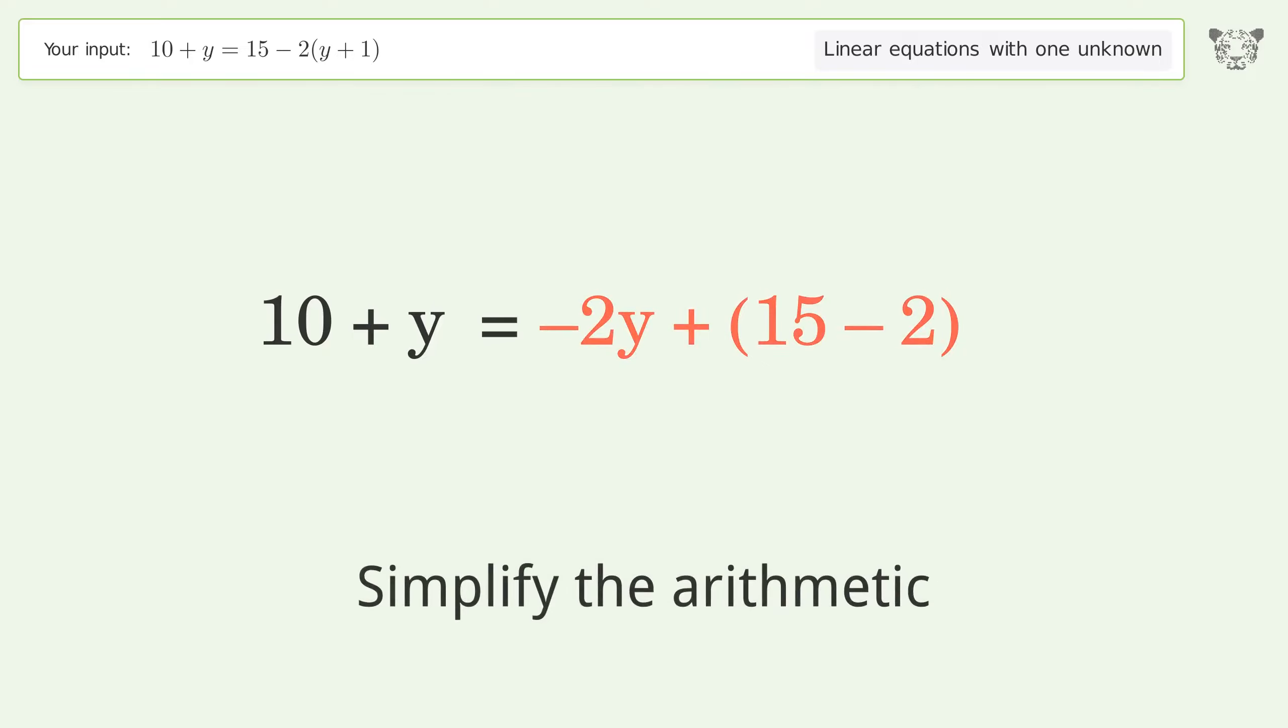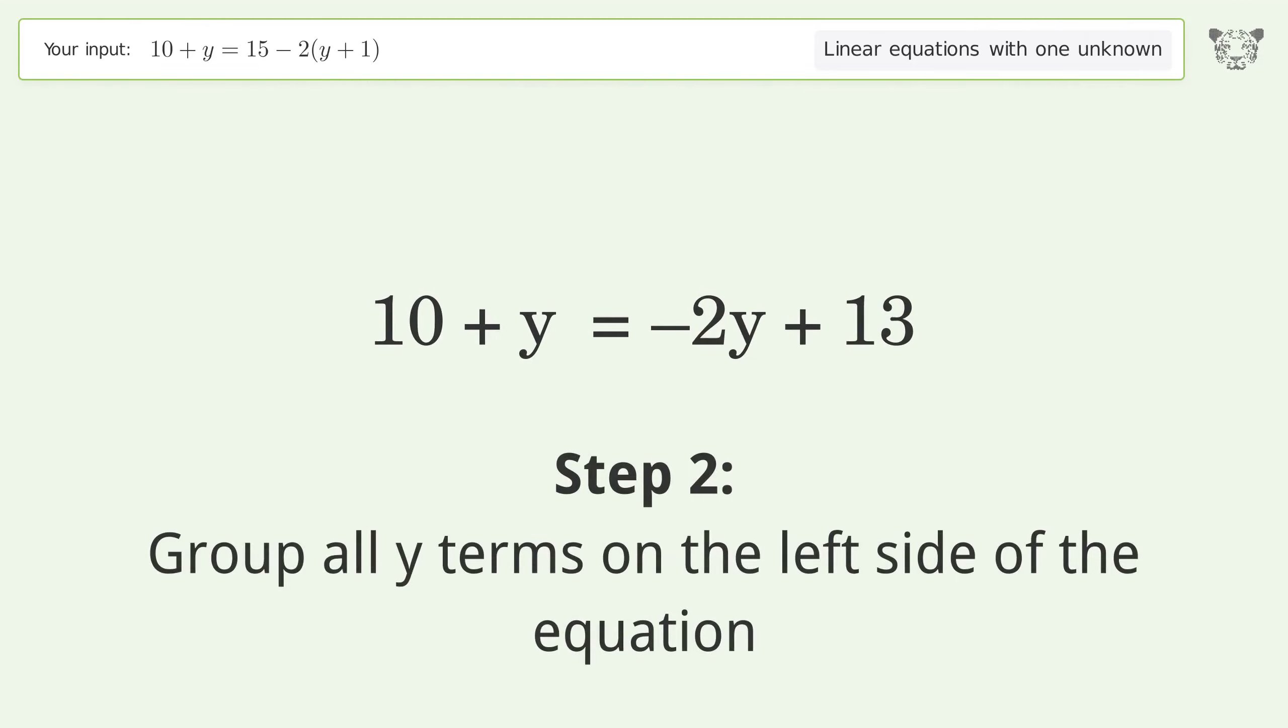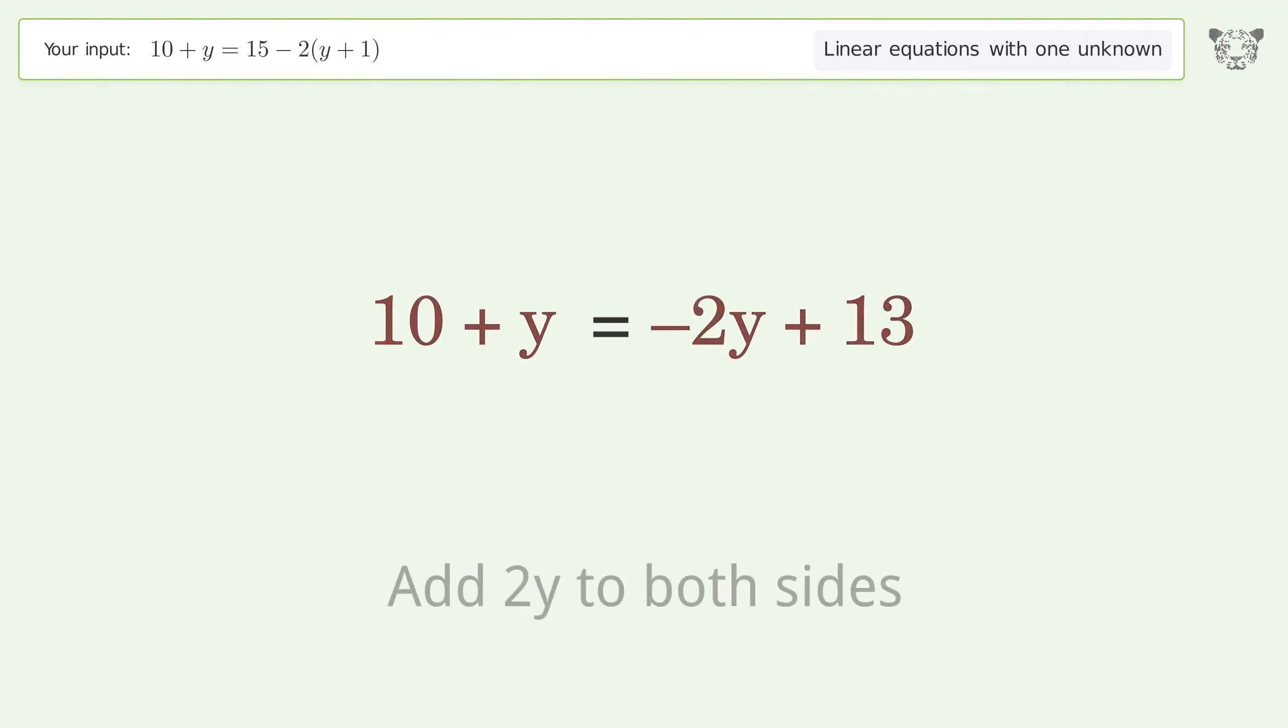Simplify the arithmetic. Group all y terms on the left side of the equation. Add 2y to both sides.